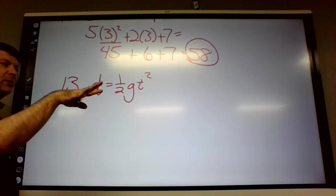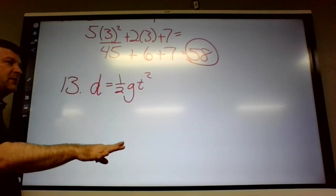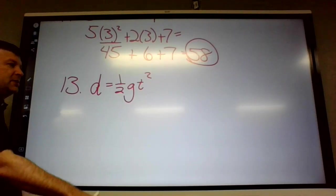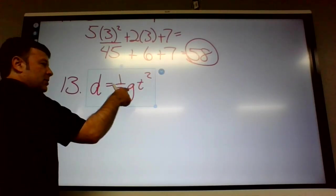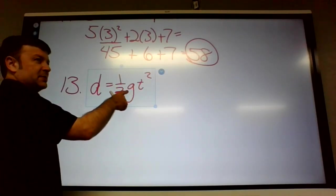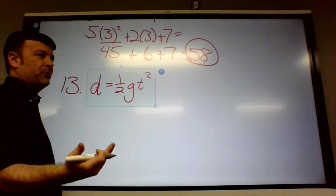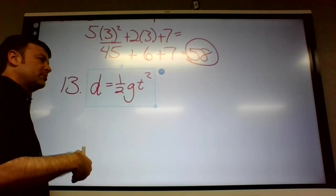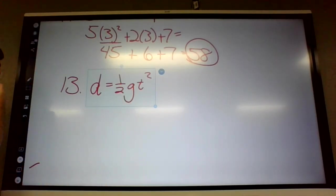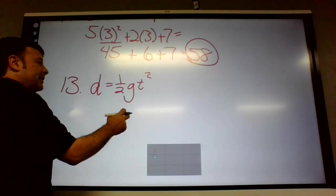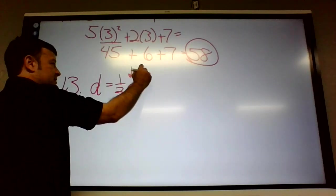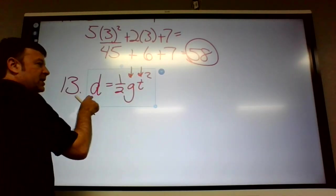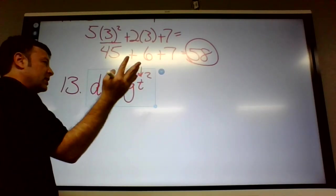And then what do you think d stands for? Distance. This will be like our answer. What do you think t stands for? Time. It's almost always time. So how far the ball drops or whatever is going to depend on how much time has passed, right? Like the more time that's passed, the farther the ball will drop. What do you think g stands for? Gravity. So like one of the problems is Earth's gravity, one problem is Moon's gravity. So it's different. Stuff falls slower than the Moon. You guys probably know that.